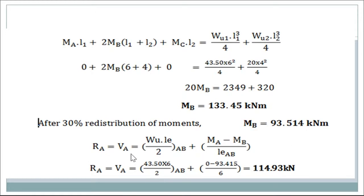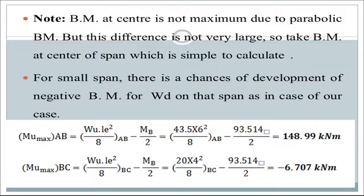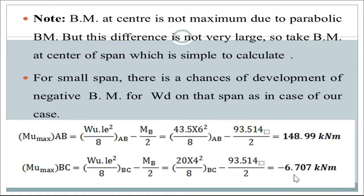Using the standard equations, we find the shear force at support A = 114.93 kN. Since the bending moment variation is parabolic, the maximum bending moment does not occur at center, but the difference is small — so we take bending moment at center of span for simplicity. For small spans there is a chance of negative bending moment when WD is applied. Maximum bending moment for AB = 148.99 kNm; maximum bending moment for BC = negative 6.707 kNm.